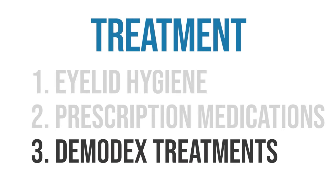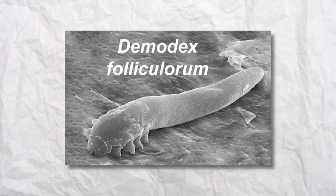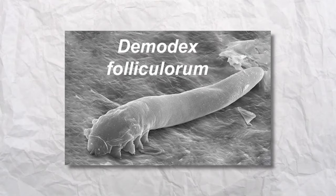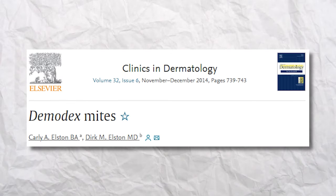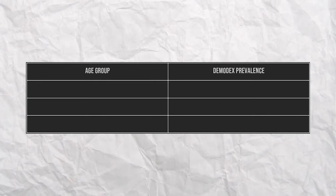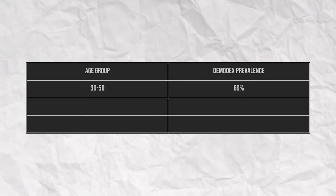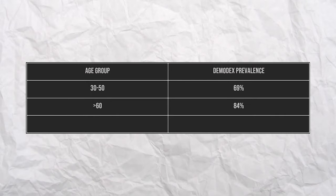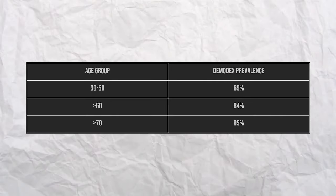We talked about the most effective treatment options for blepharitis, from lid hygiene to topical antibiotics to oral antibiotics. The one last topic I'll cover is demodex blepharitis. Demodex is the name of mites that many people naturally have living on their skin — they inhabit the hair follicles and sebaceous glands, including the eyelids. A study from 2014 found a prevalence of demodex in 69% of 31 to 50-year-olds, 84% in patients older than 60, and 95% in patients 70 years of age and older.